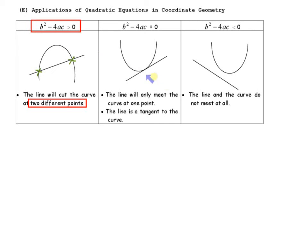For the second condition, the line will only meet the curve at one point. This straight line is called a tangent. When they say the line is a tangent to the curve, it means the line will only intersect the curve at one point. So for the second condition, b squared minus 4ac equals 0.